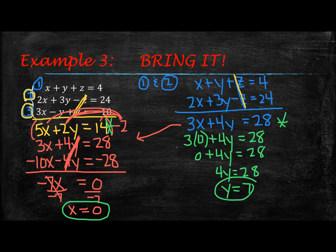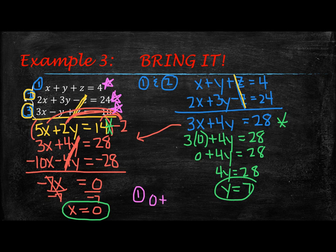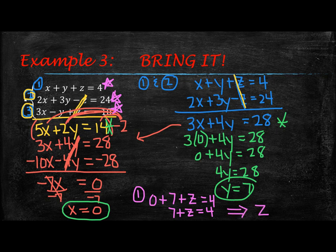So now I'll take my x and y values and plug them into either of the original equations. I notice the first equation has smaller numbers, so I'll use that one. My x value is 0, so 0 plus my y value of 7 plus z has to equal 4. Well, 0 plus 7 is 7, so 7 plus z equals 4. Subtracting 7 from both sides gives a z value of negative 3.